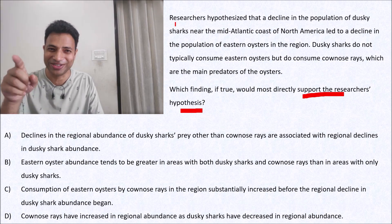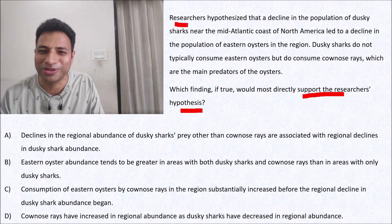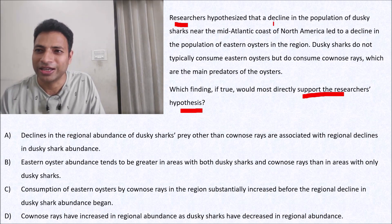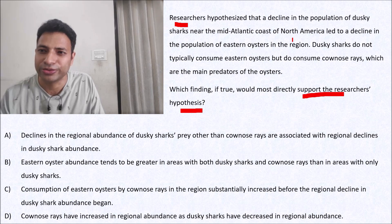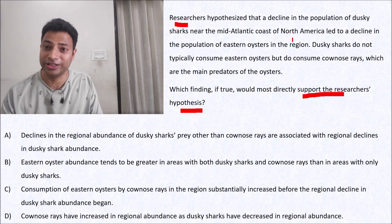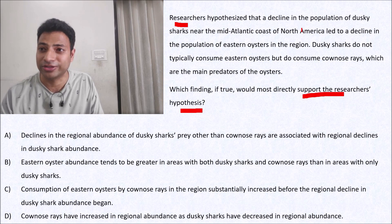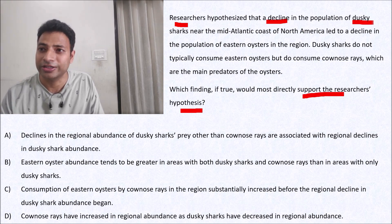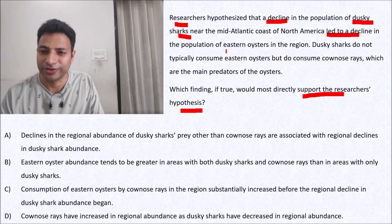It's given in the first line. Researchers hypothesize that a decline in the population of dusky sharks near the mid-Atlantic coast of North America led to a decline in the population of eastern oysters. So a decline in dusky sharks led to a decline in eastern oysters — that's the hypothesis we have to strengthen.